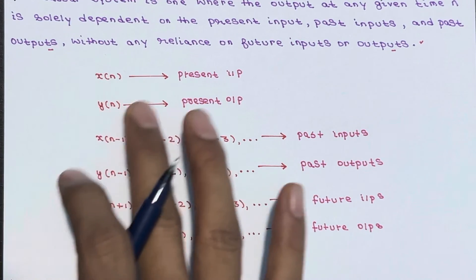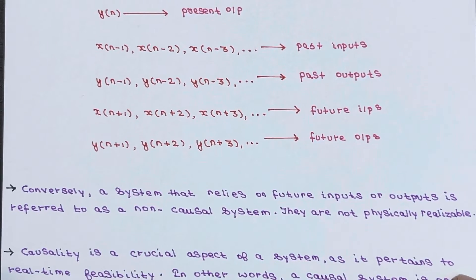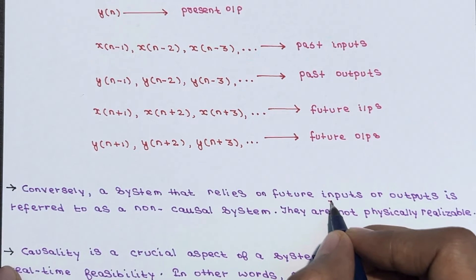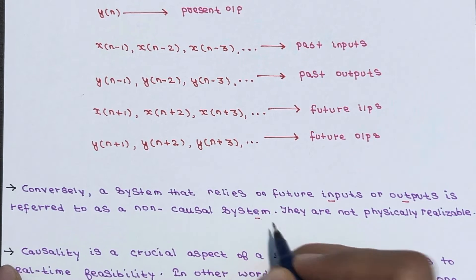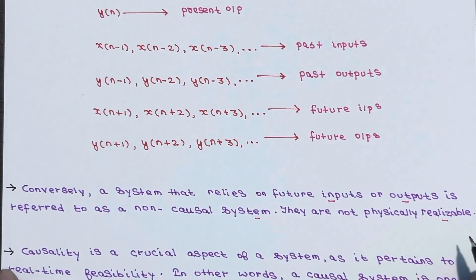Now let's look at the definition of a non-causal system. In simple terms, a system that relies on future inputs or future outputs is referred to as a non-causal system, and such systems are not physically realizable. Causal systems, on the other hand, are physically realizable.